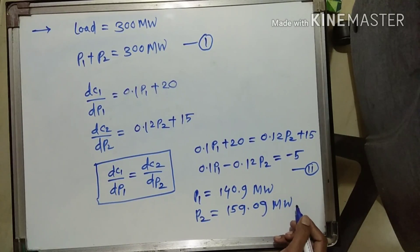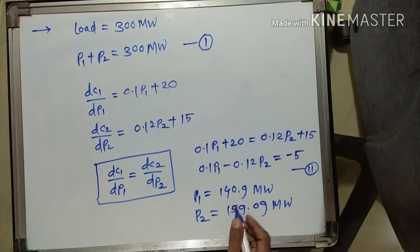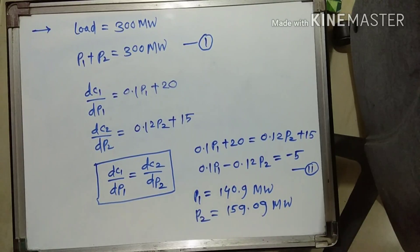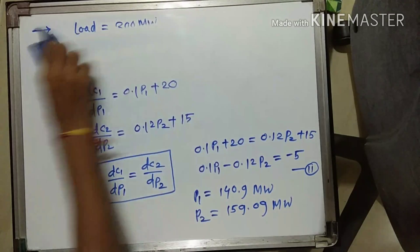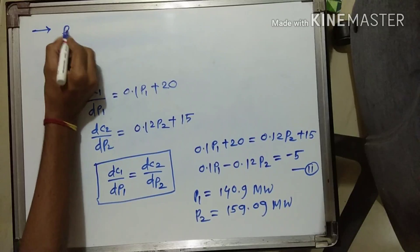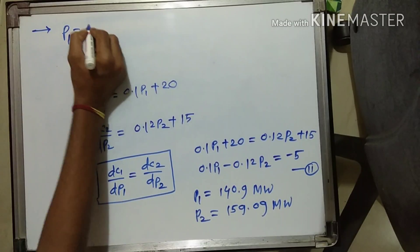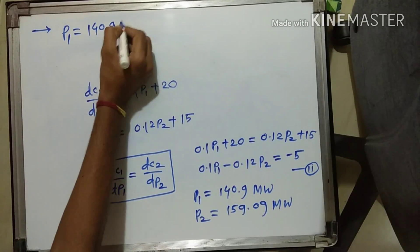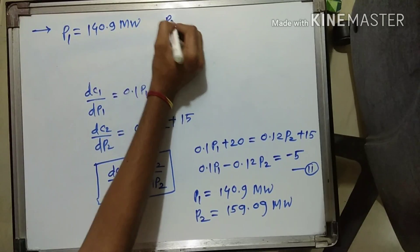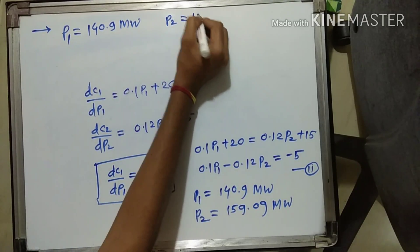Hence, we have solved the first part of the question. This is the most economical load division between generator 1 and generator 2: P1 = 140.9 megawatt and P2 = 159.09 megawatt.